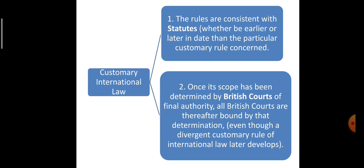First we will deal with customary international law, because Britain deals separately with these two categories of international law. Customary international law has to undergo two conditions. The first condition is that the rules of international law must be consistent with the existing statutes of Great Britain. Britain is not enacting new laws but accepting international rules as part of the incorporation theory, whether the existing act of Britain is earlier or later. It will accept only if it is consistent and beneficial to its nation's social, economic, or political conditions.